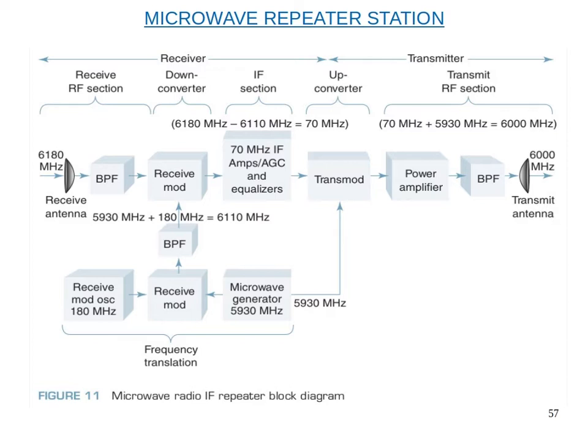The output of the microwave generator is also fed through the shift oscillator and shift modulator to convert it to another frequency for the receive mode section. This frequency translation section — comprising the shift oscillator, receive mode oscillator, and shift modulator — is used for the receive mode. The details of the frequency translation section describe how two different carrier frequencies are generated from a single microwave generator.